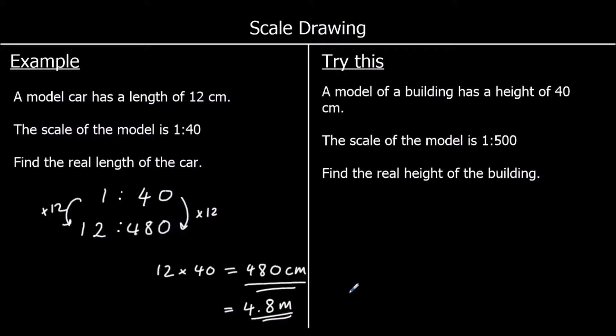Now a question for you to try. A model of a building has a height of 40 cm. The scale of the model is 1 to 500, so 1 cm on the model represents 500 cm in real life. Find the real height of the building. Every 1 cm is 500 cm in real life, so 40 cm in the model is going to be 40 times 500 in real life.